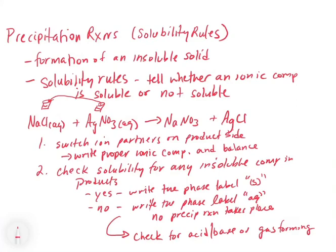Just because you don't get a solid does not mean that you're done — it just means you have to go on and check the next thing. But in this case, if you get a no, that means no precipitation reaction is taking place. So let's check our solubility rules. NaNO3 — we know that all nitrates are soluble, and all sodium compounds are soluble. So that one's aqueous. Now, generally speaking, all chlorides are soluble except for silver chloride, among others. So silver chloride is going to get a solid label.